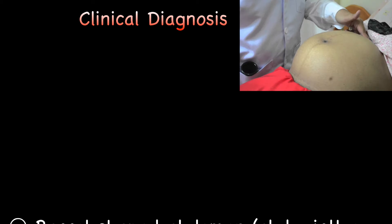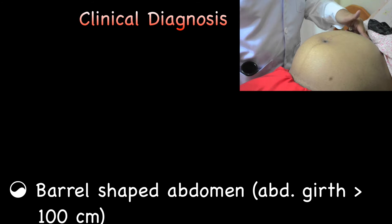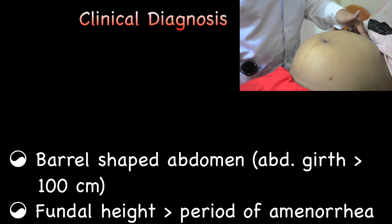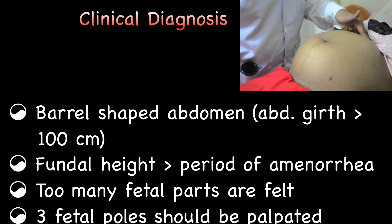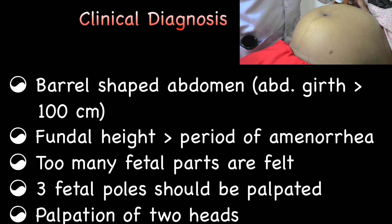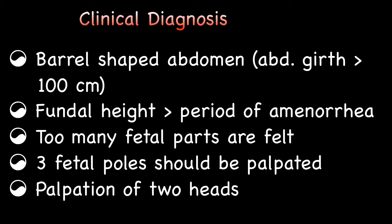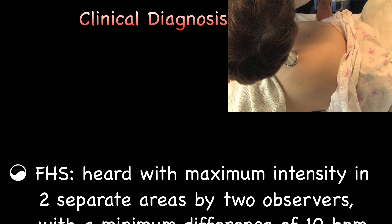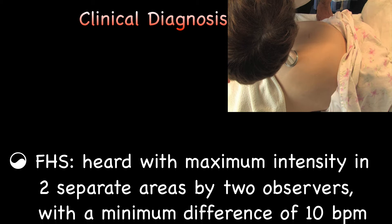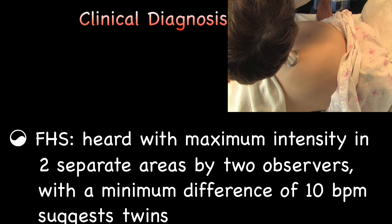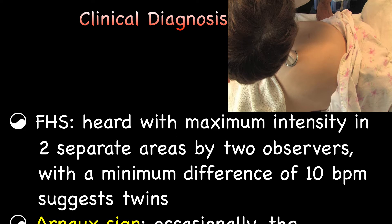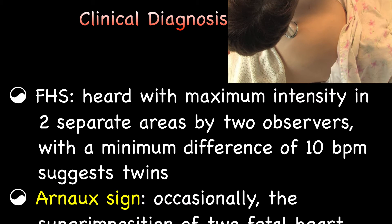On examination, clinical findings that point to a plural pregnancy are barrel-shaped abdomen, abdominal girth greater than 100 cm, fundal height greater than period of amenorrhea, too many fetal parts felt, or three fetal poles or two fetal heads are felt. Fetal hearts heard with maximum intensity in two separate areas by two observers, with a minimum difference of 10 beats per minute, suggests twins.